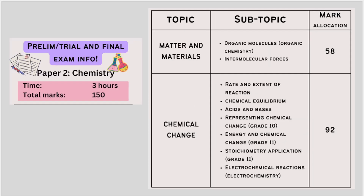For your chemistry paper, there's a bigger divide. The first section is matter and materials — mostly organic chemistry and intermolecular forces. As I've said before in my videos and live classes, 58 out of 150 marks go towards organic chemistry. That's about 30 to 38% of your paper, so organic chemistry is a big portion — you need to master that. The rest of your paper is split between all the other topics. It's a good idea to look at past final papers for grade 12 and check the mark allocation.